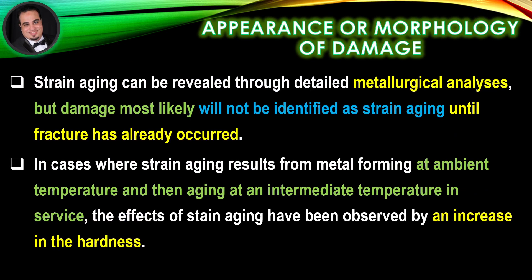Strain aging can be revealed through detailed metallurgical analyses, but damage most likely will not be identified as strain aging until fracture has already occurred. In cases where strain aging results from metal forming at ambient temperature and then aging at an intermediate temperature in service, the effects of strain aging have been observed by an increase in hardness.